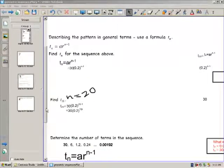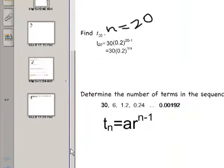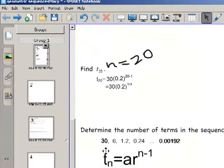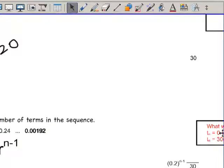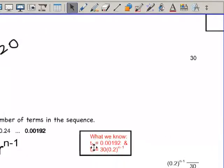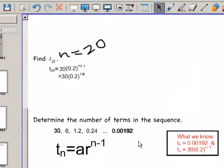Now, moving on to the last thing that you will be asked to do in your ISU. We will give you a sequence. There will be a gap in the sequence. And we will ask you to determine how many terms are in the sequence. So working with the sequence above, we are asked to find how many terms. This is what we know. We know the last term is 0.00192. And we know the general term.